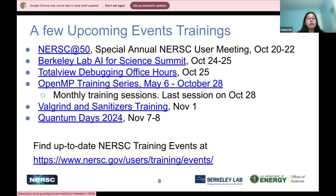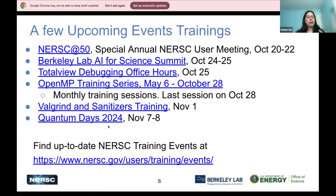The OpenMP training series has been running for five months, and there will be a last session on October 28th covering catch-all and remaining topics including hybrid MPI OpenMP. You can go to the website to find all previous slides, recordings, and hands-on exercises. It covers OpenMP from basics on CPUs, tasking, all the way to GPU offload and hybrid. On November 7th and 8th, there's the Quantum at NERSC 2024 annual event. You can find all information on our website — user training events for all upcoming events — and there's also a link for all past training events with slides and recordings.